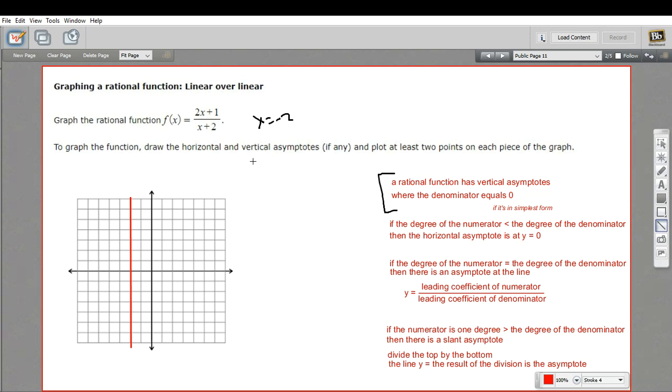Next, we need to figure out if it has a horizontal asymptote. In this case, the degree of the numerator and denominator is what determines that. We have x to the first power on top and x to the first power on the bottom. So they are even. They are equal. And that follows this rule. So if the degree of the numerator equals the degree of the denominator, then there's an asymptote at this line, which is the leading coefficient of the numerator over the leading coefficient of the denominator.